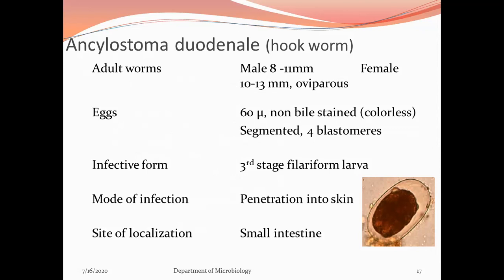The rhabditiform larvae of Ancylostoma duodenale and Necator americanus are morphologically similar, but the filariform larvae are morphologically different between the two species. In brief: adult male 8–11 mm, female 10–13 mm, female is oviparous. Eggs ~60 micrometers, non-bile-stained, colorless, segmented with four blastomeres, thin hyaline translucent shell with a clear space between shell and embryo. Infective form is the third-stage filariform larva. Mode of infection is penetration of the skin. Site of localization is the small intestine.